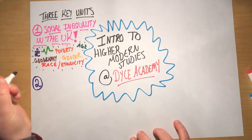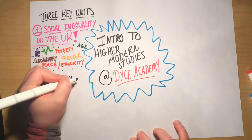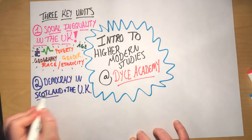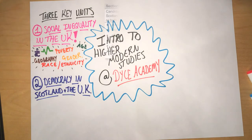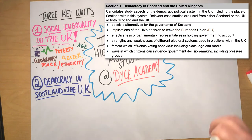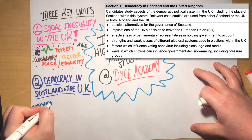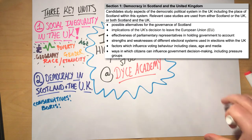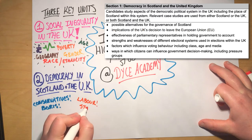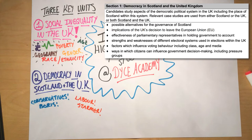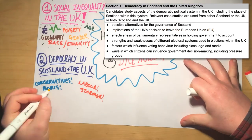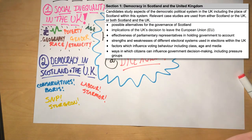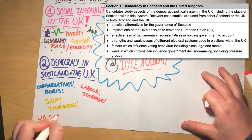Next, we have our second unit, which is democracy in Scotland and the UK. Here we look at how decisions are made in Scotland and how that compares to the United Kingdom as a whole. For those of you who have done National 5 Modern Studies, this is going to build on what you've covered there, expanding it to think about Scotland and the UK together — looking at how we vote for the people who represent us, what their role is, whether they form the government, or whether they're part of the wider parliament, and how the parliament holds the government to account, making sure the prime minister or first minister isn't going rogue.